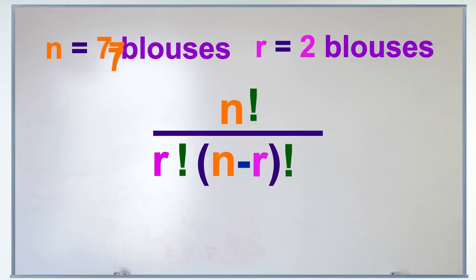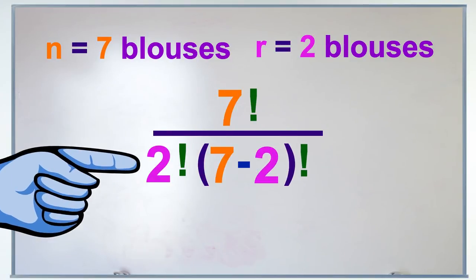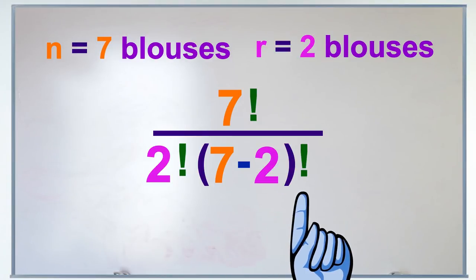Well, we can plug again, replacing n with 7 and r with 2, to get 7 factorial over 2 factorial times the quantity 7 minus 2 factorial.